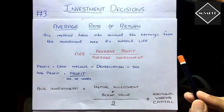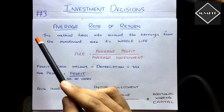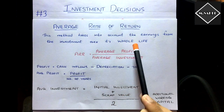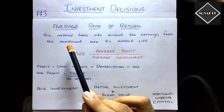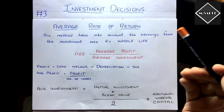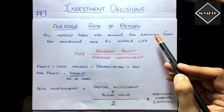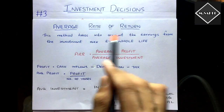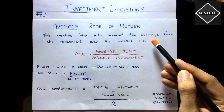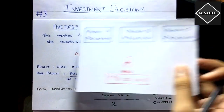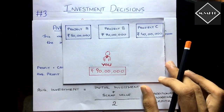Let's understand the Average Rate of Return technique. This method takes into account the earnings from the investment over its whole life. Whatever earnings — that is, accounting profits — the investment fetches us, those are taken into account in this Average Rate of Return technique. Here, profits — accounting profits — are taken into account.